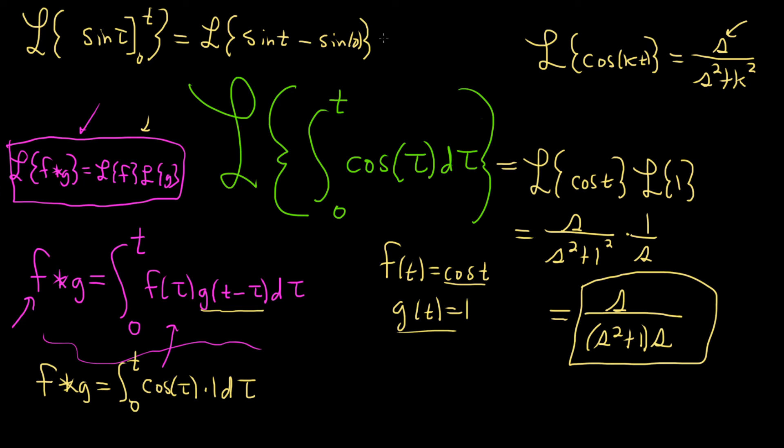So then this is equal to the Laplace of sine t. The Laplace of sine t—well sine has the k. So it's the same as the cosine formula, except there's the k up top. So it'll be 1 over s squared plus 1.